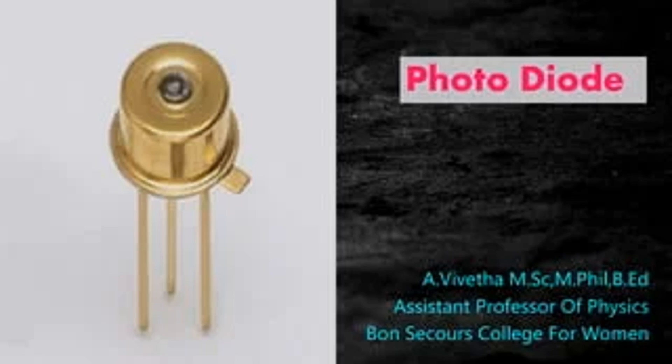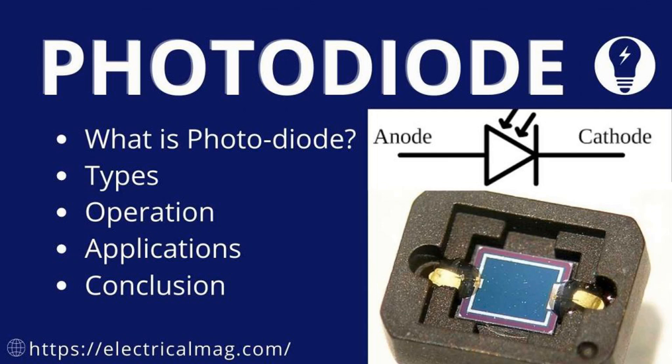Output: The output of a photodiode is typically a current that is proportional to the incident light intensity. This current can be converted to a voltage using a simple resistor or an operational amplifier in a trans-impedance configuration, making it easier to measure and process.